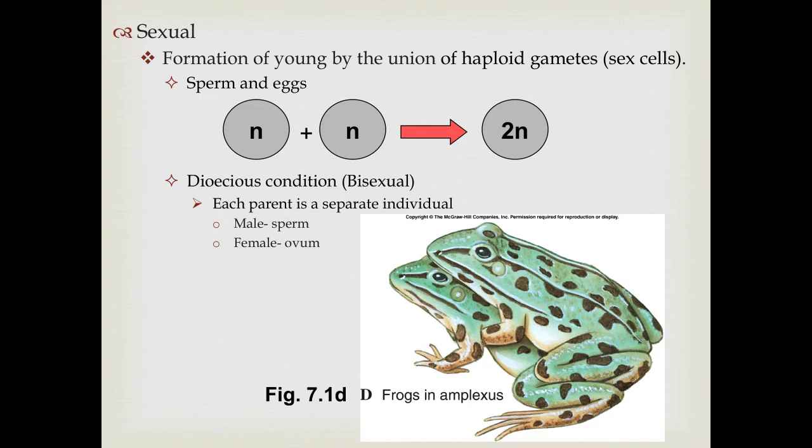The type of sexual reproduction most familiar to us is the dioecious condition, or bisexual reproduction, in which both parents are separate individuals — either male, which by definition produce sperm, and females, which by definition produce eggs, or ova. The singular of ova is ovum.